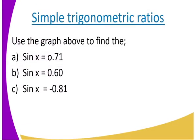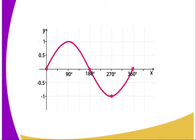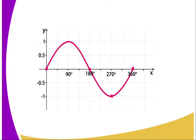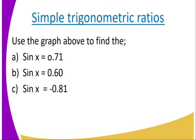Taking use the graph above to find sin x = 0.71, so what do we do? We just come to the graph, go to where 0.71 is, which is around here, and then you come to the graph, then you go down and read the values.